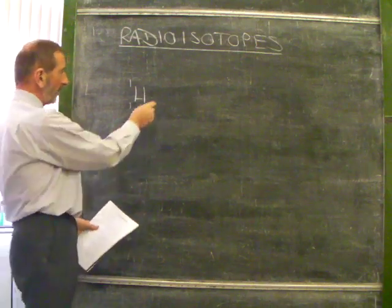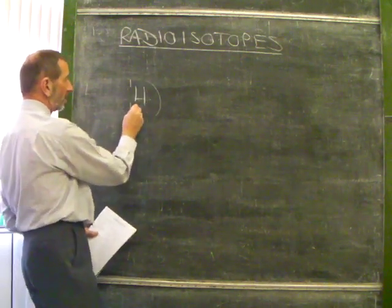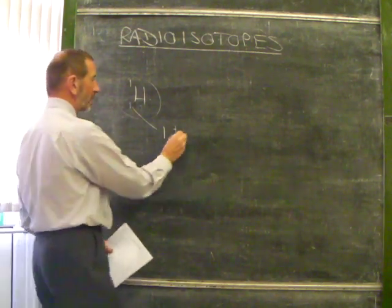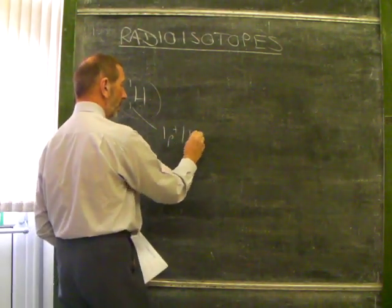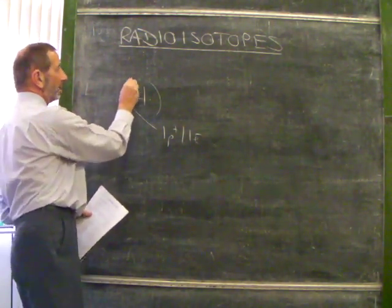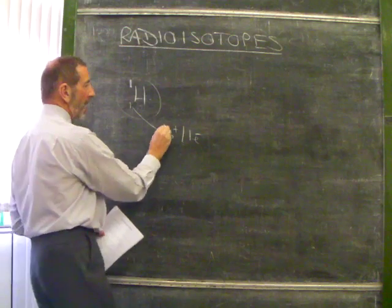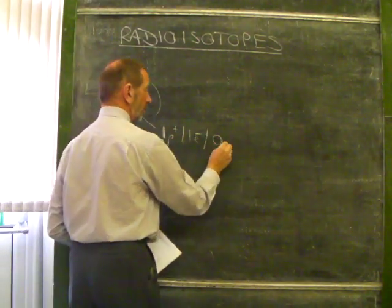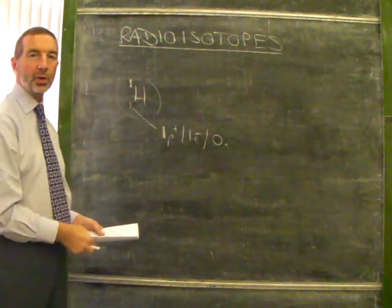It's very simple. If you look at this, it tells us it has one proton. If it has one positive proton, then this atom must have one negative electron. And with a mass of one, that mass of one is this proton - it has no neutrons. This atom is not radioactive.